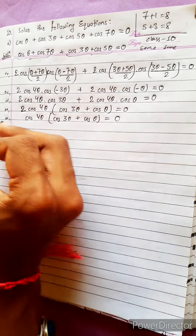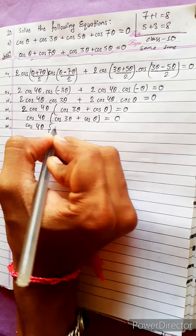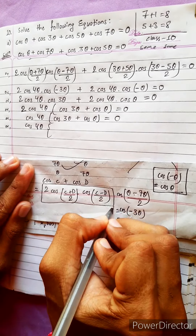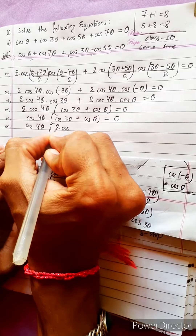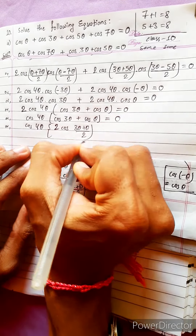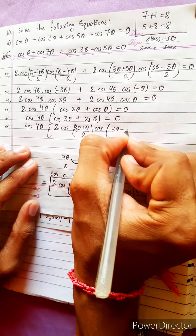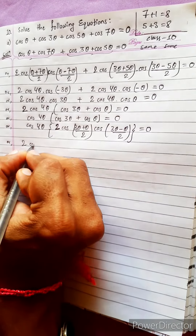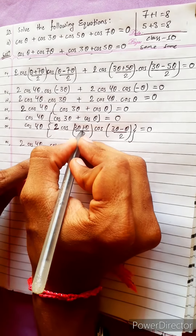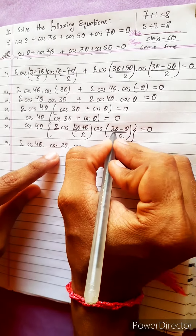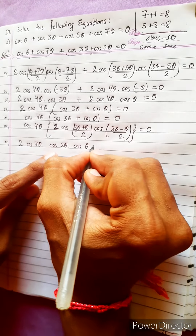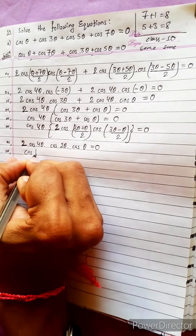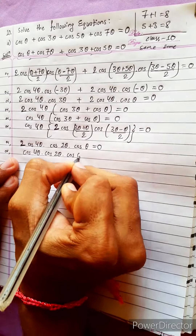Now we apply the same cos C + cos D formula one more time to cos 3θ + cos θ. Using 2cos((C+D)/2)·cos((C−D)/2): here C=3, D=1, so C+D=4, giving cos(2θ); and C−D=2, giving cos(θ). This results in cos(4θ) · 2cos(2θ) · cos(θ) = 0. Removing the numerical factor 2, we get cos(4θ) · cos(2θ) · cos(θ) = 0.